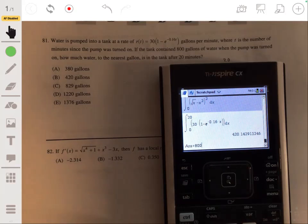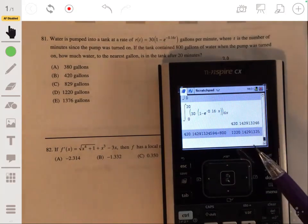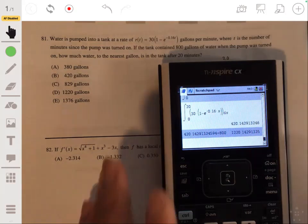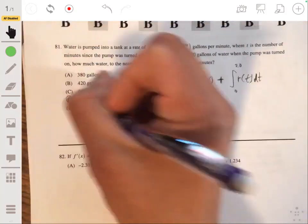We get 420. And then let's make sure we add 800 to this. So plus 800. And we get about 1220, 1220.14. So round it to the nearest gallon, it would be D, 1220 gallons.